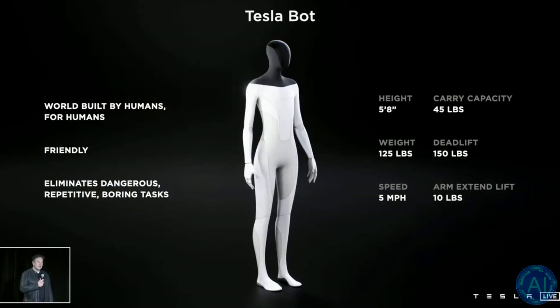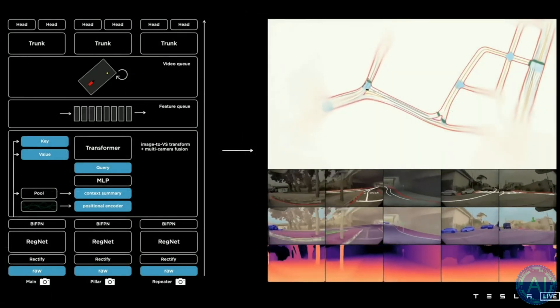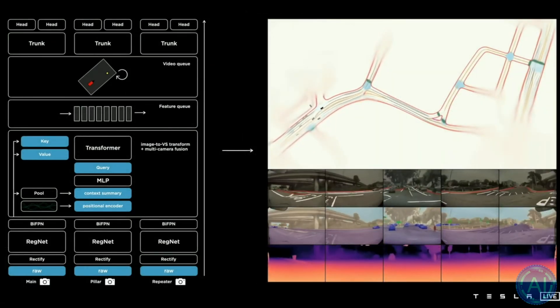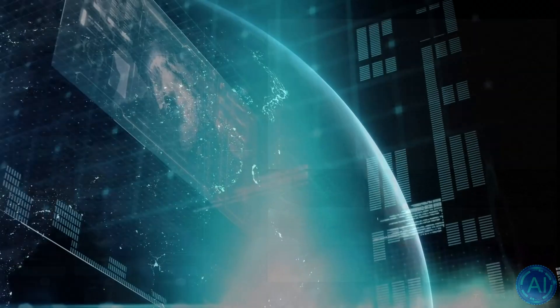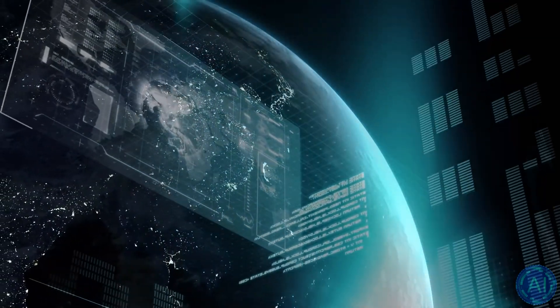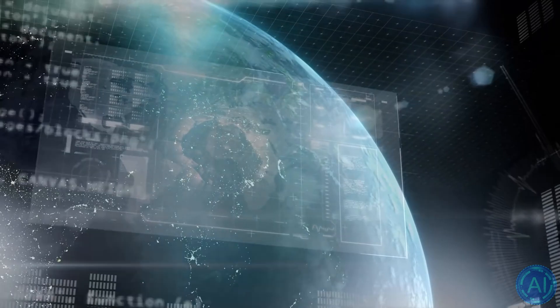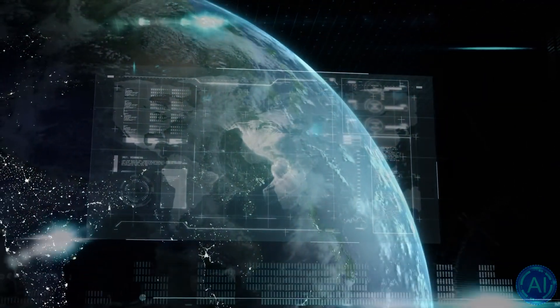Elon Musk, the CEO of Tesla, revealed the Tesla bot, a humanoid robot that uses the same artificial intelligence as Tesla's fleet of self-driving cars. During Musk's presentation, a dancer costumed as a Tesla bot did a little odd dance, but no working version of the robot was shown.